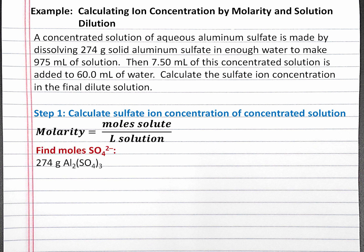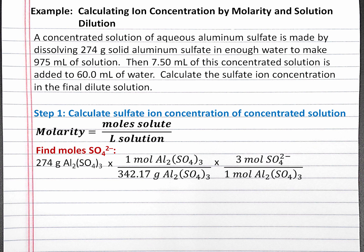To calculate the moles of our solute, which is sulfate, we'll start with 274 grams of aluminum sulfate in our dimensional analysis. We'll convert from grams of aluminum sulfate to moles of aluminum sulfate using the molar mass of aluminum sulfate. Then we can convert from moles of aluminum sulfate to moles of just sulfate using the number of sulfate ions in the formula unit — there are three sulfates in aluminum sulfate. Performing this calculation, we get 2.4 moles of sulfate.